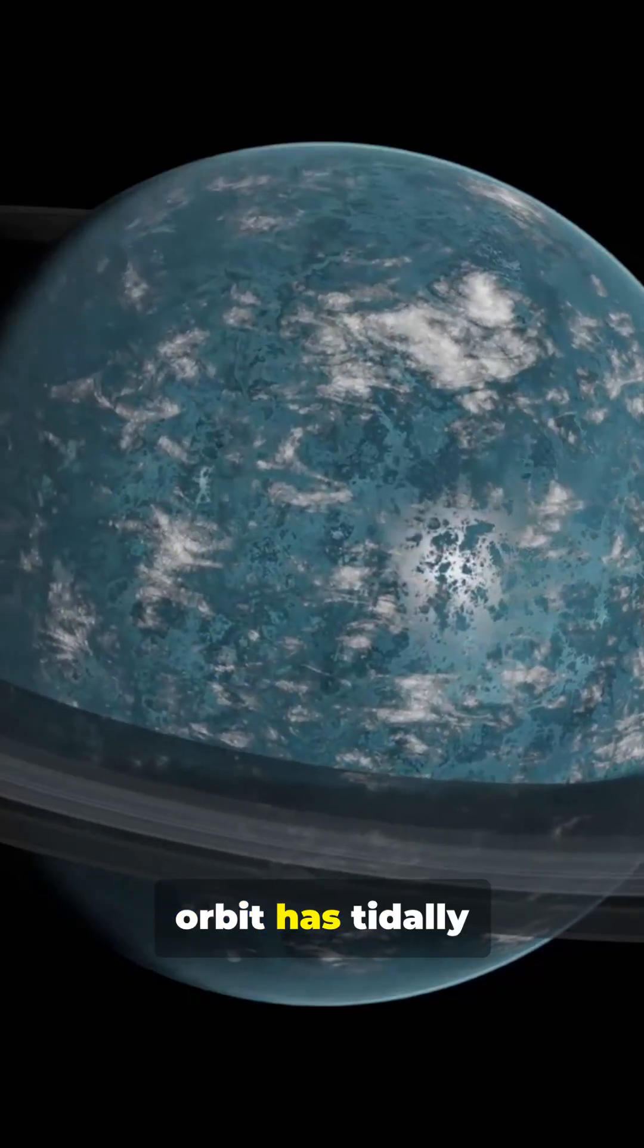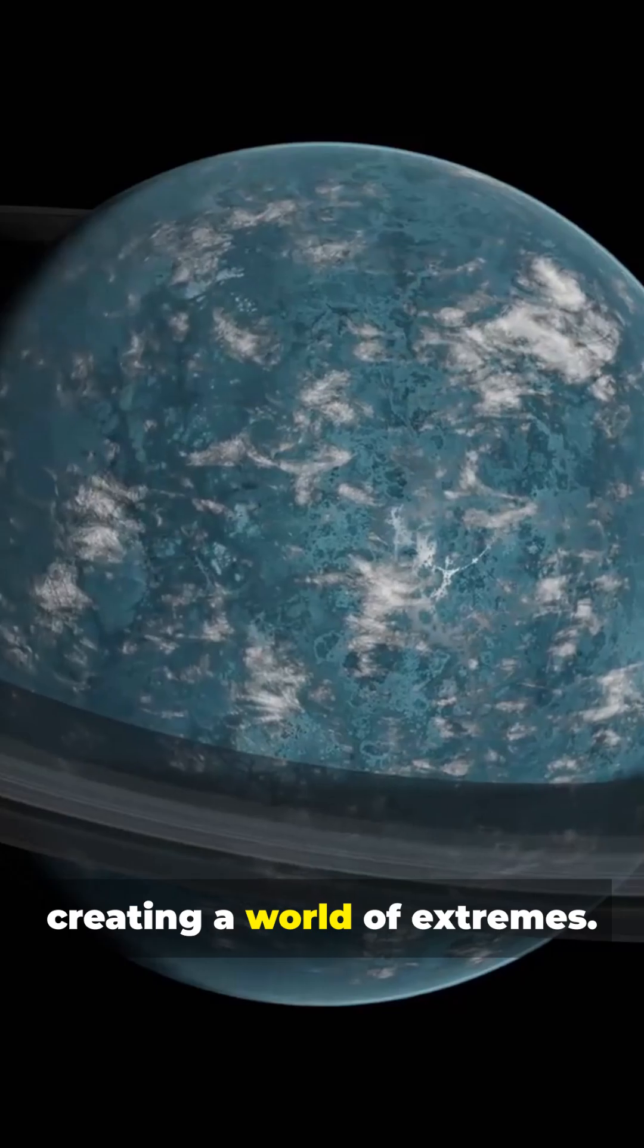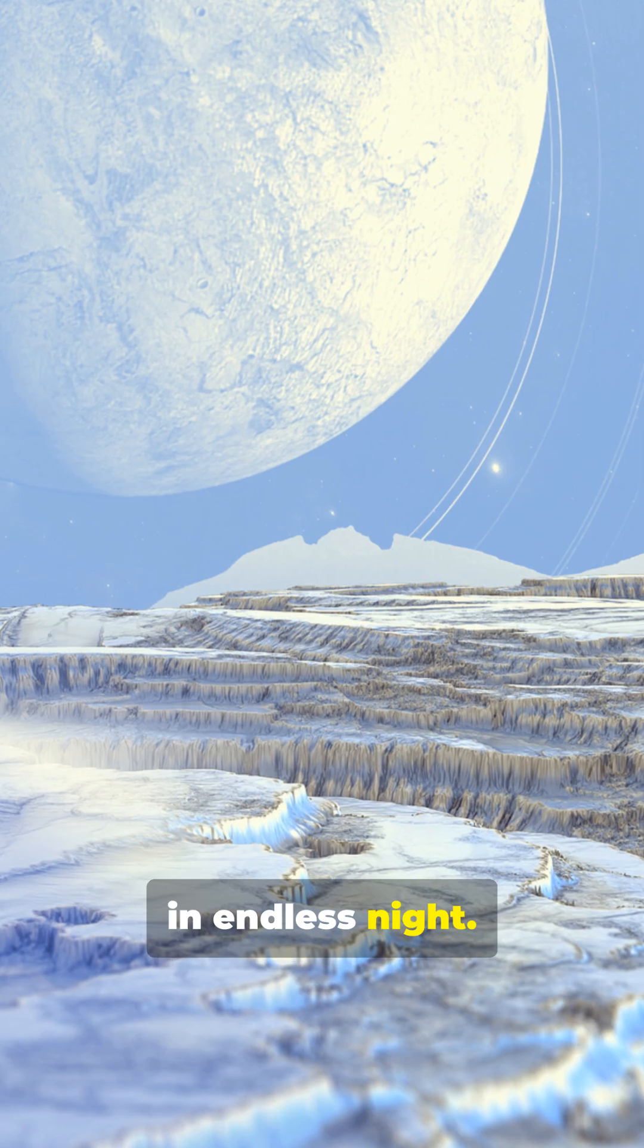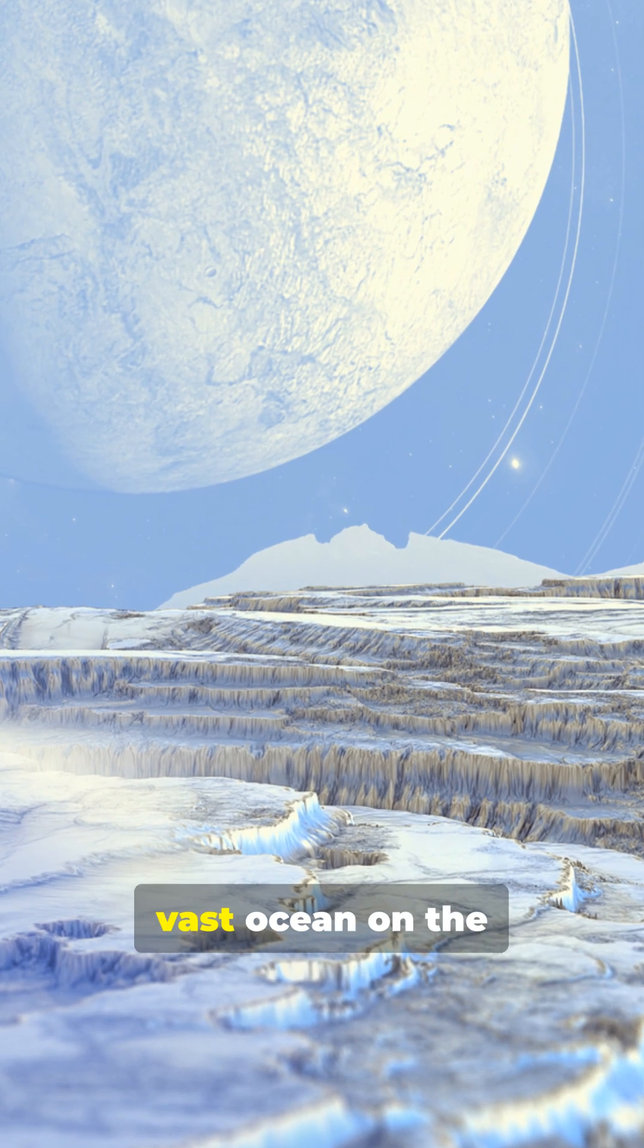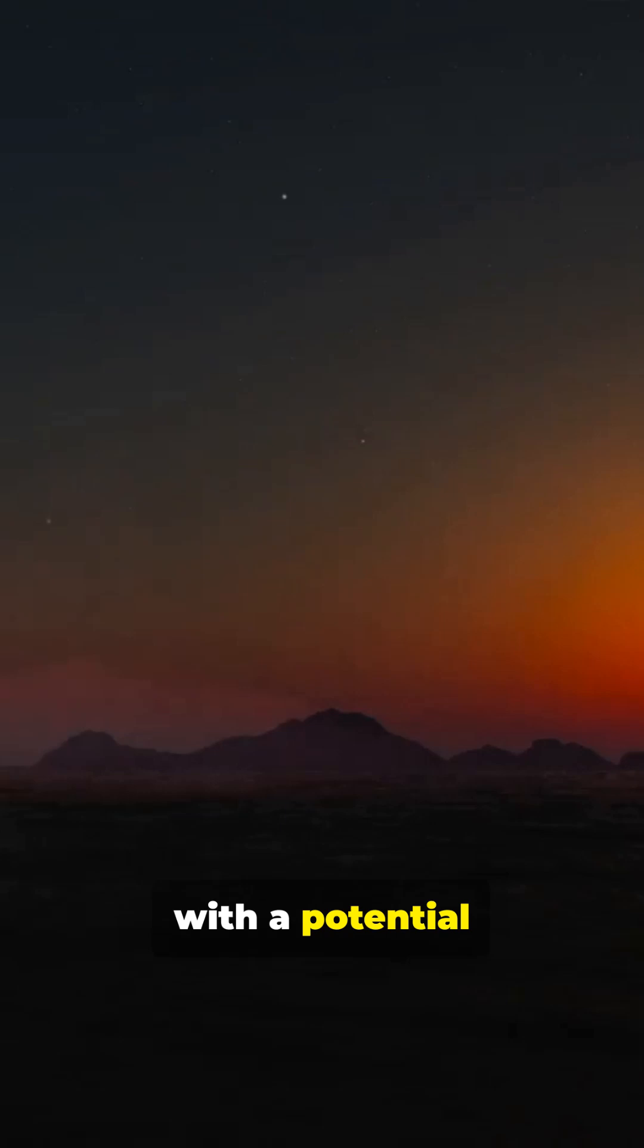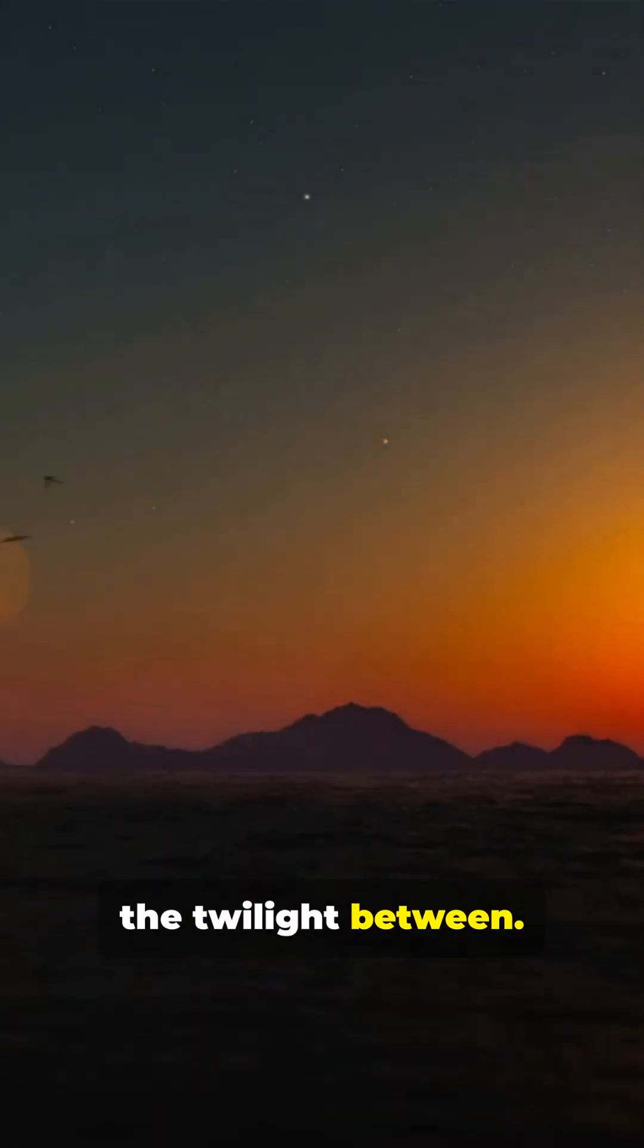The planet's close orbit has tidally locked it, creating a world of extremes. One side bakes in constant daylight, the other freezes in endless night. This means any water could be a vast ocean on the day side or a thick ice shell on the dark side, with a potential habitable zone in the twilight between.